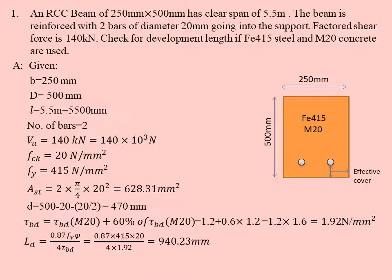After that we substitute it in the formula of development length: LD = 0.87 × fy × φ / (4 × τbd) and we get 940.23 mm.